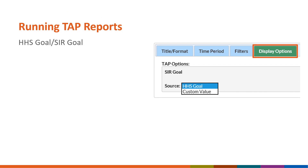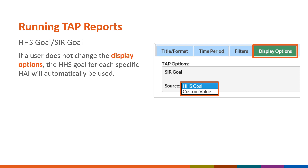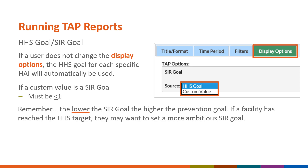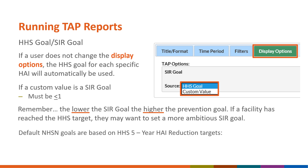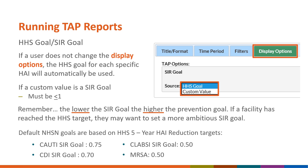Under the Display Options tab, users can select to use HHS goals or a custom SIR goal. HHS goals are the default for TAP reports. If a custom value is specified as the SIR goal, the value must be less than 1. Remember, the lower the SIR goal, the higher the prevention goal. If a facility has reached the HHS target, they may want to set a more ambitious SIR goal. Each HAI type has a separate HHS five-year HAI reduction target goal, listed by HAI type on this slide.